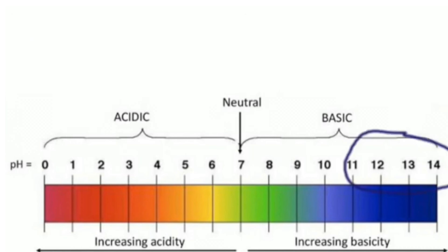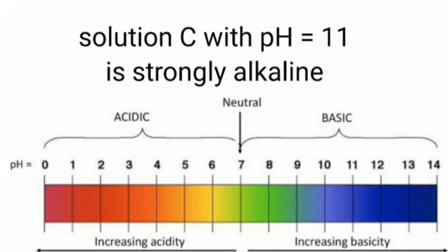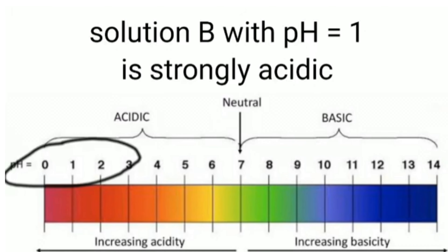Higher the pH than 7, more alkaline is the solution. Solution C has the highest pH and is the strongly alkaline solution. Lesser the pH than 7, more acidic is the solution. Solution B has the lowest pH and hence is strongly acidic.